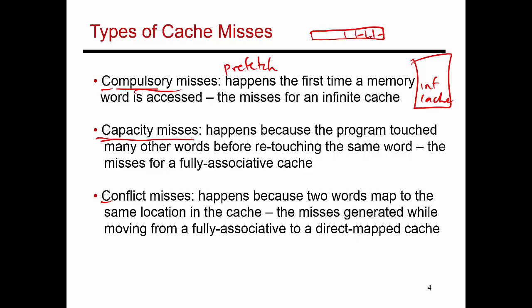The next kind of miss is a capacity miss. Say I have a 64-kilobyte cache. I bring something in, then touch a whole bunch of other data. If I revisit that first block before touching 64 kilobytes worth of other data, it should be a cache hit. But if I touch a lot of other data first, there's a good chance that block has been evicted, causing a miss — that's a miss because the cache doesn't provide enough capacity. To measure capacity misses, we use a fully associative cache.